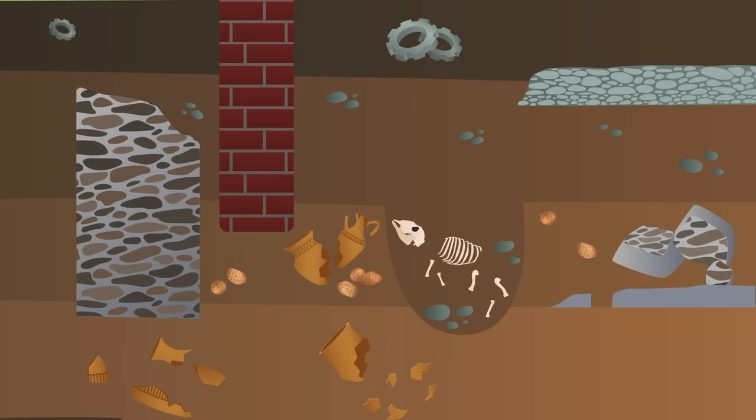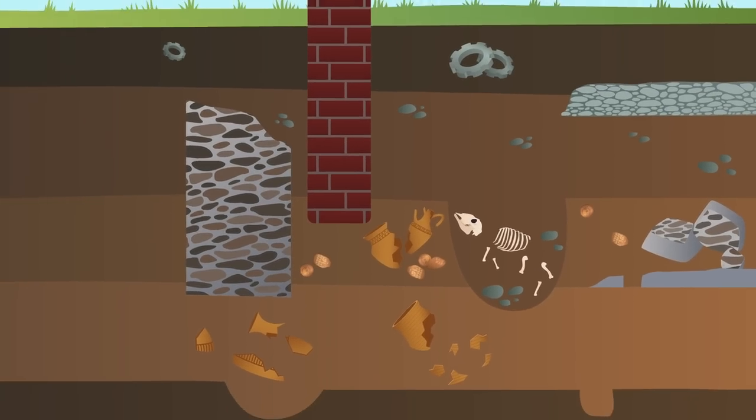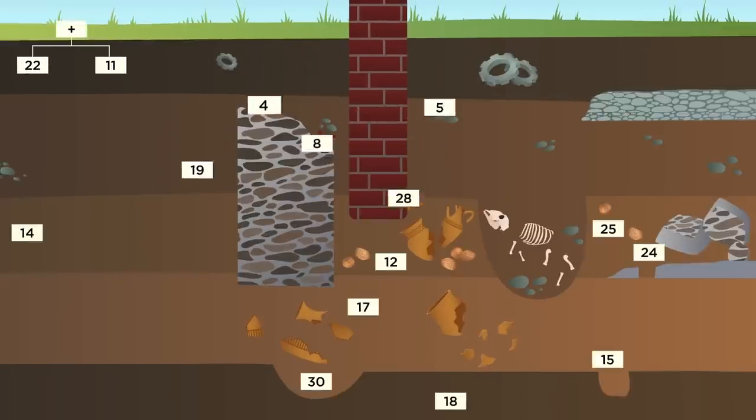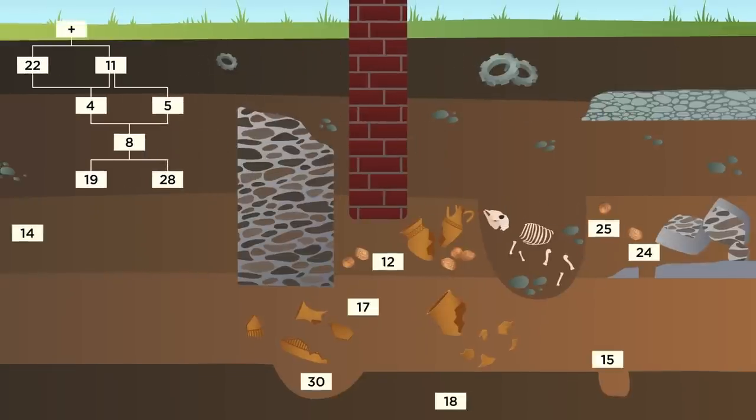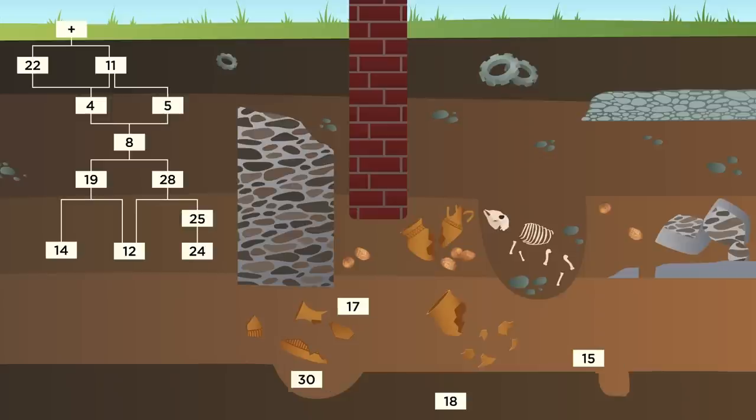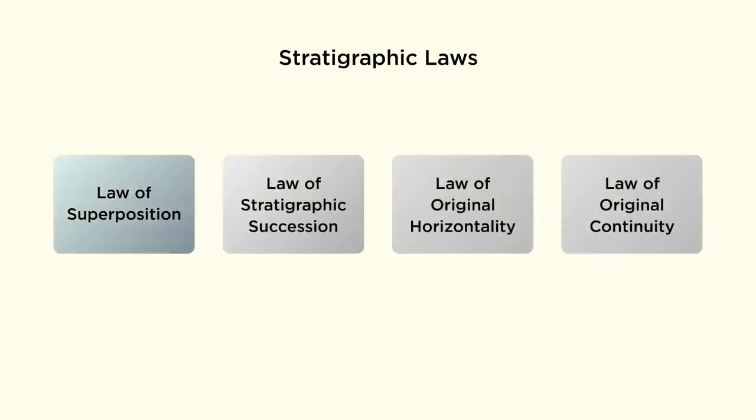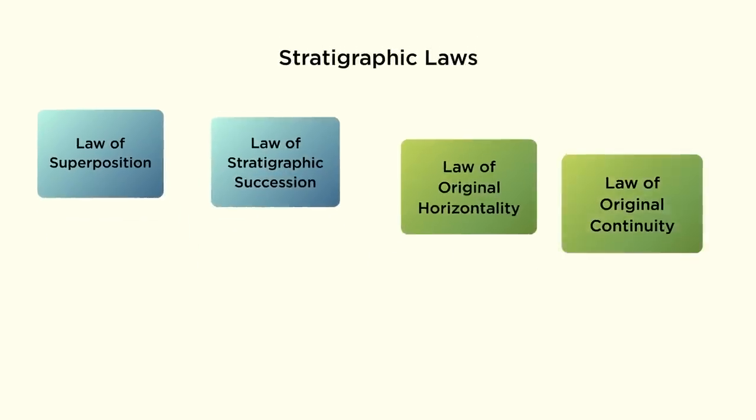To understand the depositional sequence, archaeologists record and analyze stratigraphy using methods set out by Dr. Edward Harris in the 1970s. Harris adapted geological principles to construct rules that explain the way archaeological stratigraphic units relate to one another. He set out four stratigraphic laws of archaeological stratigraphy.